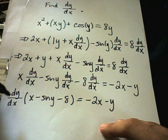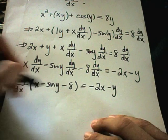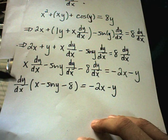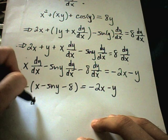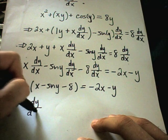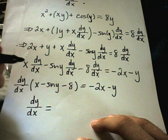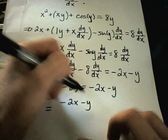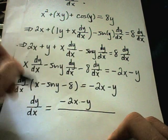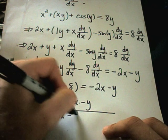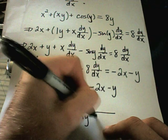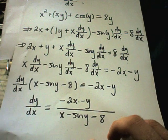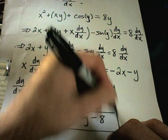And to get dy/dx by itself, we simply divide by all of the stuff in the parenthesis. So I'll be left with dy/dx on the left side. And on the right side, I'll be left with negative 2x minus y. And after dividing, I'll have x minus sine y minus 8. And that will be our solution to this problem.